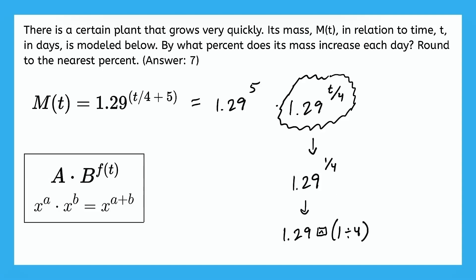So the way I do that is first type 1.29 and then use that button that means to the power of and then parentheses 1 divided by 4, close the parentheses. So when you press equals, you should get 1.06573 and that number keeps going, right? So how do we express this as a percent?